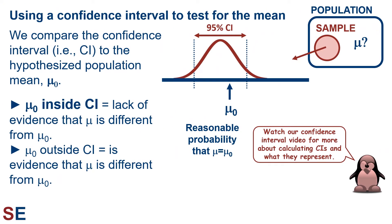Our approach will be to use a confidence interval to test for the mean of the population. If you don't remember what confidence intervals are, you can watch our confidence interval video. We compare the confidence interval from our sample to the hypothesized population mean mu naught. We're showing a 95% confidence interval for now, because that's the most common one used. If mu naught is inside the confidence interval, there's a lack of evidence that the population mean is different from mu naught — that's exactly the sort of result we would expect if the population mean really is mu naught.